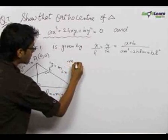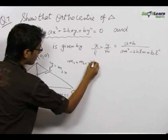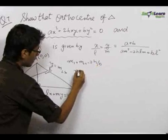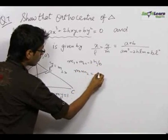Now we know that m1 plus m2 equals minus 2H upon B and m1 m2 equals A upon B.